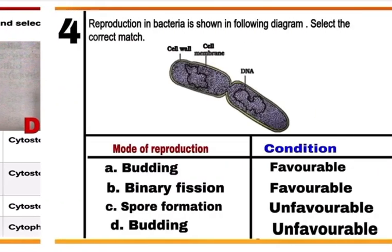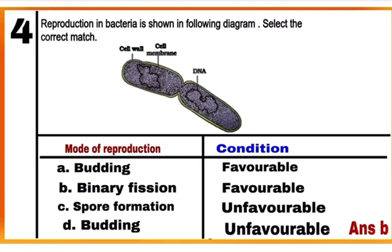Question 4: Reproduction in bacteria is shown in the following diagram. Select the correct match. Bacteria reproduce mainly by fission as shown in the figure. This occurs when conditions are favorable, but under unfavorable conditions they produce spores. The correct match is option B — the mode of reproduction shown is binary fission under favorable conditions. Mark B as the correct answer.